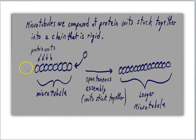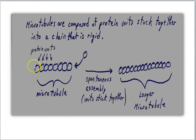Microtubules are rod-like proteins composed of subunits that can stick together to form a longer rod-like protein. Here we see a picture of these little golf ball-looking things, and the idea is each of these subunits is a protein, but their chemical nature allows them to stick together.